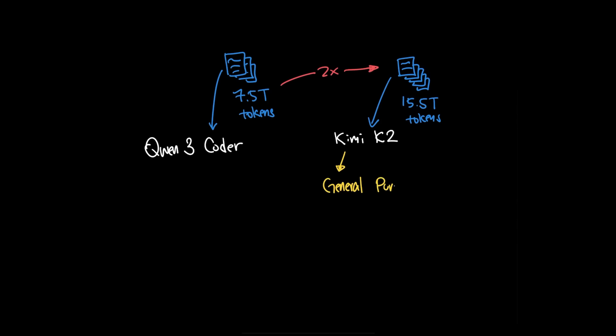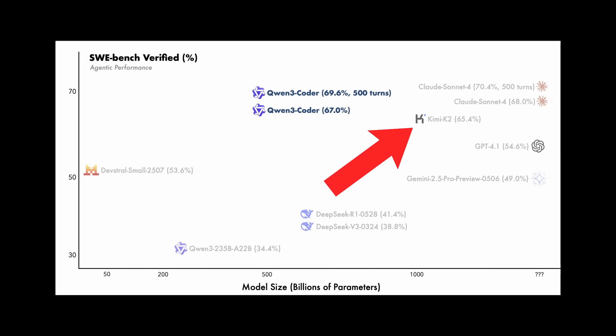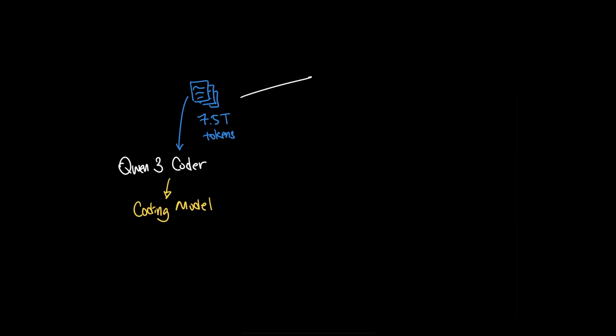However, it's worth noting that KimiK2 is not specifically a coding model like Quen3 Coder is. But the difference in data size is staggering given that Quen3 Coder outperformed KimiK2 in coding benchmarks. It's also worth noting that 70% of the data that Quen3 Coder used for training was coding data.